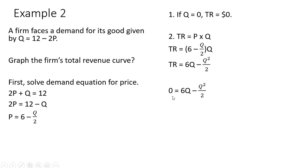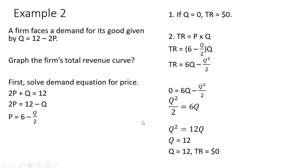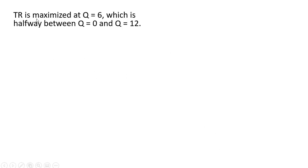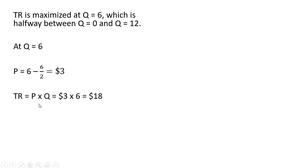Setting total revenue equal to zero, we'll find our other quantity where total revenue is zero. Solving for Q — multiplying both sides through by two and dividing both sides through by Q — we get Q equals 12. So when Q equals 12, total revenue is zero. Total revenue is maximized at Q equals 6, which is halfway between Q equals 0 and Q equals 12. At Q equals 6, plugging into our inverse market demand, the price will equal $3, and total revenue at its maximum will be $18 — 3 times 6.